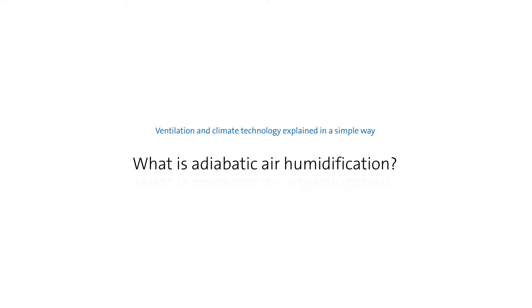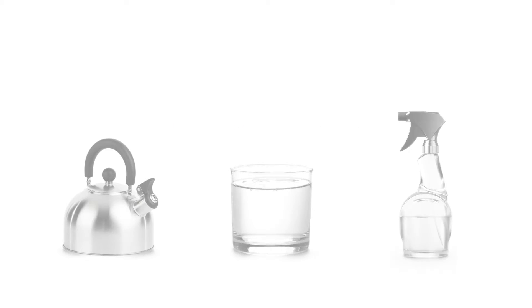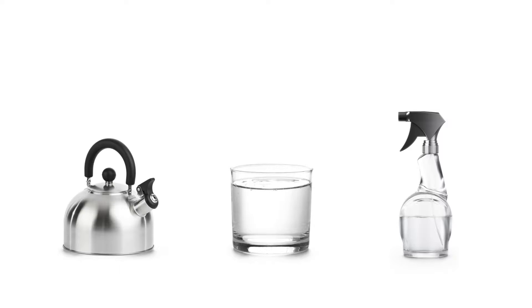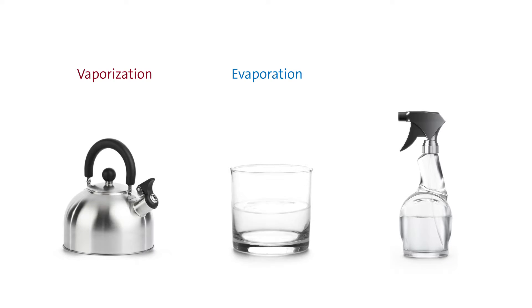What is adiabatic humidification? There are basically three physical methods for air humidification: vaporization, evaporation, and atomization.